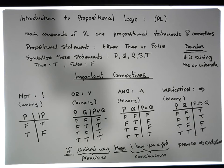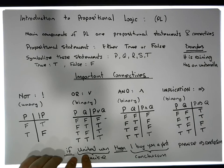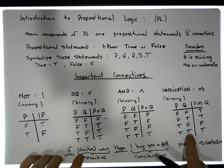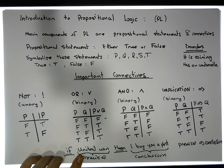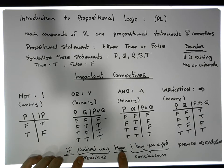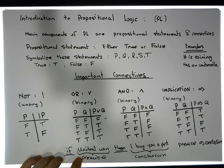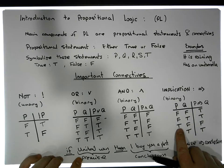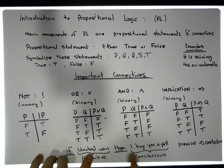Let's take the easy case: true-true. Suppose United win — that's true — and I buy you a pint — that's also true. If United did win and I did buy you a pint, then I haven't told you any lies, so the output must be true.